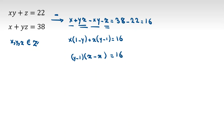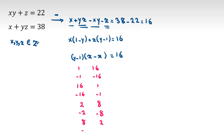Now, the product is 16, so I should consider different cases. Let me write them with another color. The cases are: (1, 16), (-1, -16), (16, 1), (-16, -1), (2, 8), (-2, -8), (8, 2), (-8, -2), (4, 4), (-4, -4).